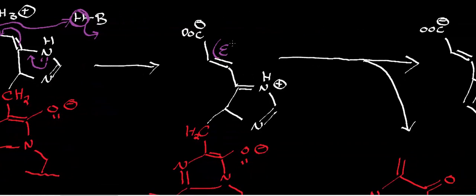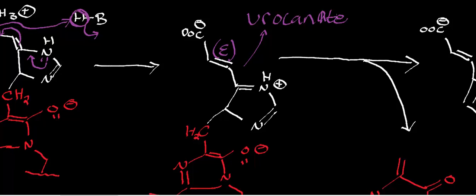Now what we have is this E-configuration double bond — if we were to assign configuration to that double bond, it would be E. And we still have this urocanate group — what was histidine is now called a urocanate group — and it's still ligated to the methylidine imidazolone.